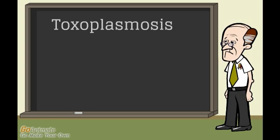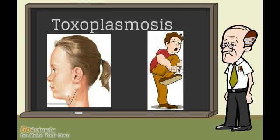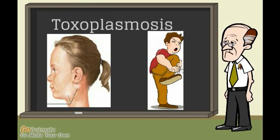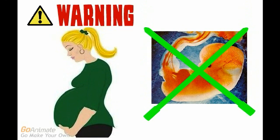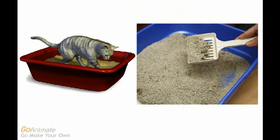Toxoplasmosis is caused by a parasite called Toxoplasma gondii. Most people who get it do not get sick, but some will get swollen glands, muscle aches, and feel like they have the flu. Women who are pregnant should be especially careful because this disease can infect the fetus and cause an abortion or malformation. Toxoplasmosis is passed from contaminated cat feces, and people can catch this disease by cleaning cat litter or touching dirt where cats might have defecated.